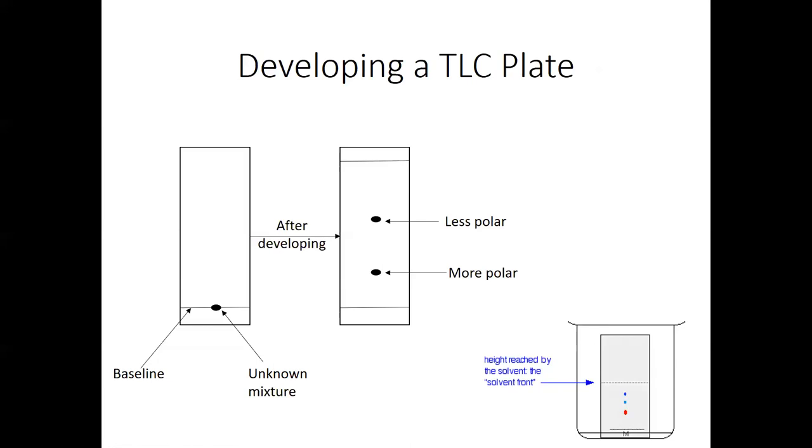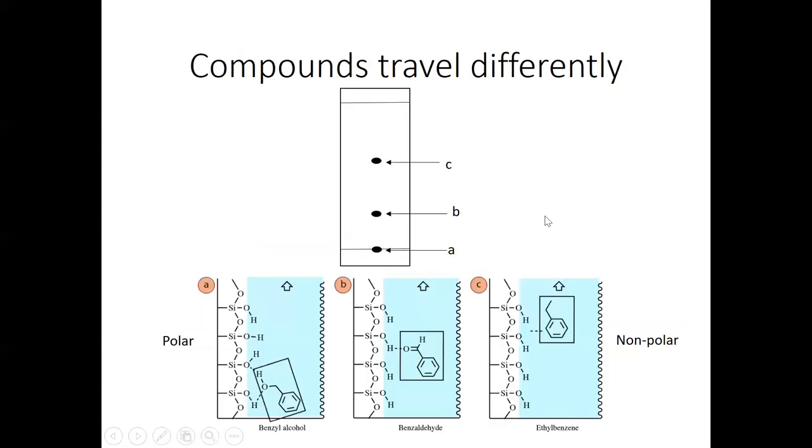And so what you would do is you would mark how far the solvent ran up the TLC plate again with pencil and then shine UV light on it. And ideally you'd see something that looks like this where you have two spots now instead of one and those two spots have separated. And then really importantly the reason that one compound travels further up the TLC plate has to do with the fact that that compound is most likely less polar relative to the other. So this is a great example where we had three compounds that move different distances up a TLC plate based on their polarities.